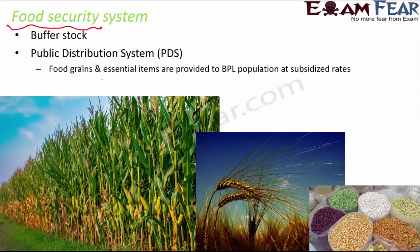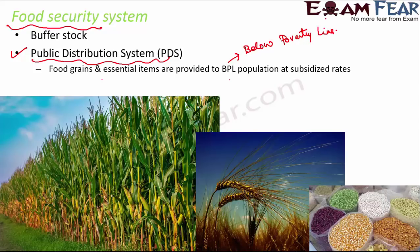We also have a system called the PDS — the Public Distribution System. The role of the PDS is to provide food grains and essential items to the BPL population at subsidized rates. BPL refers to Below Poverty Line — people who are extremely poor. We cannot sell food items to them at the same price as for people who are economically well-off, so we stock food items and provide them at low, subsidized rates.